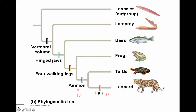Looking at four walking legs: a frog, a turtle, and a leopard all have four legs, so this is an ancestral trait among them. However, when comparing a turtle with a bass — which doesn't have four walking legs — those four walking legs are a derived trait compared to the bass. Similarly, hinged jaws are an ancestral trait shared by bass, frog, turtle, and leopard, but a derived trait when comparing those organisms to a lamprey or a Lancelet.